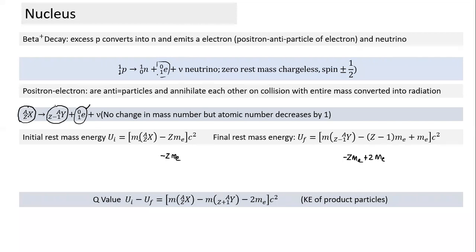This extra minus 2Me arises because the positron is part of the nucleus reaction — it comes from inside the nucleus. The reason we use atomic masses is purely for convenience. The result is Q = [M(parent atom) − M(daughter atom) − 2Me]c². This is the only case where the Q value formula differs from just the atomic mass difference.